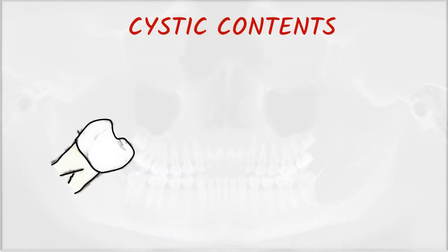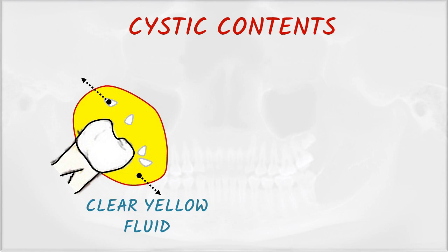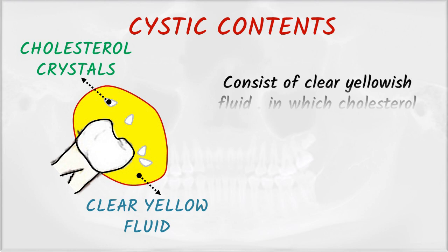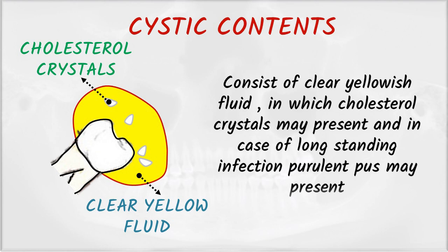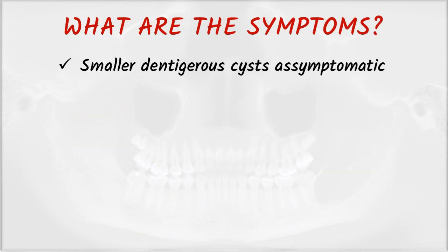How do you differentiate the dentigerous cyst from other cysts? On the basis of cystic contents. Look at the figure — it contains clear yellow fluid and white cholesterol crystals. It consists of clear yellow fluid in which cholesterol crystals may be present, and in long-standing cases, fibrin may be present.